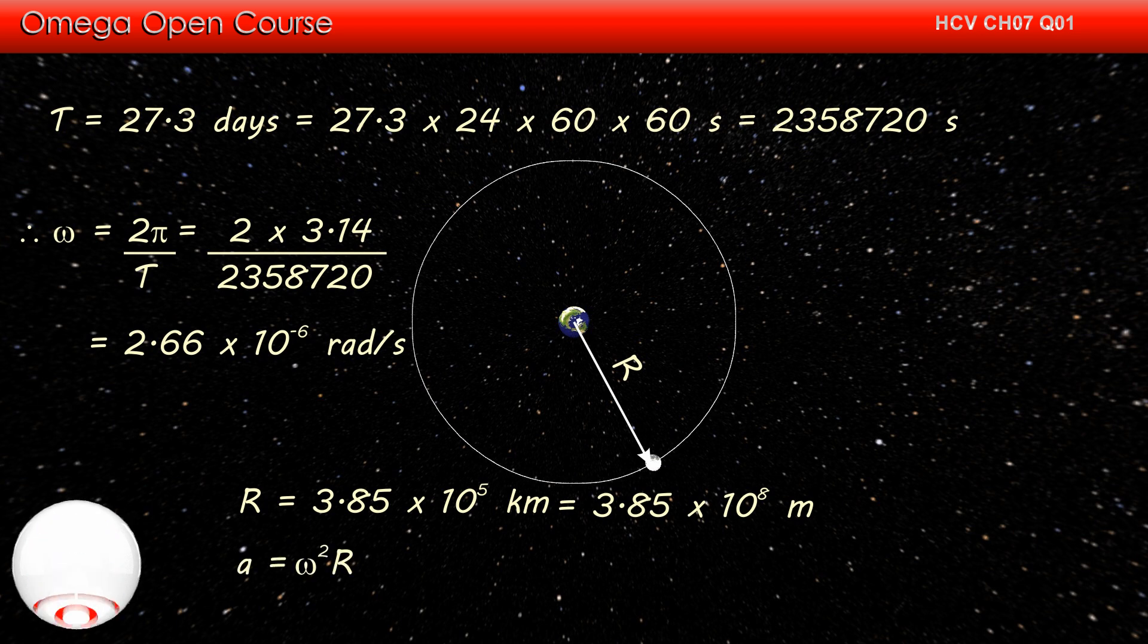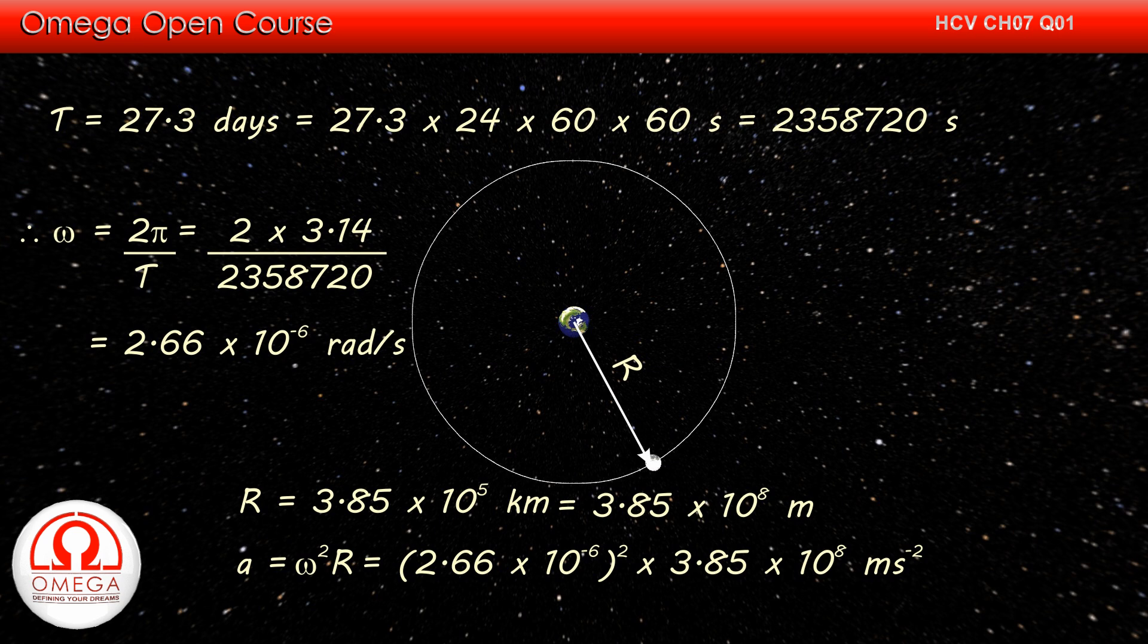Now the centripetal acceleration is given by omega square r. Putting the values, we get a is equal to 2.66 into 10 to the power minus 6 square into 3.85 into 10 to the power 8 meter per second square.